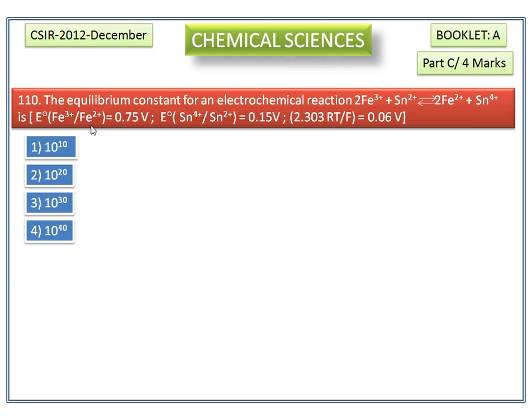So this value is supposed to be E° cathode or E°R value. It is E°R is equal to 0.75 volt. Of course, it should be E°L or E° anode value. 2.303RT divided by F is equal to 0.06 volt.